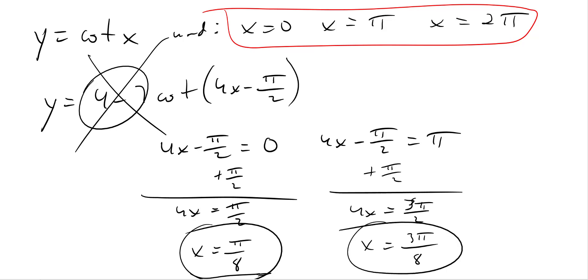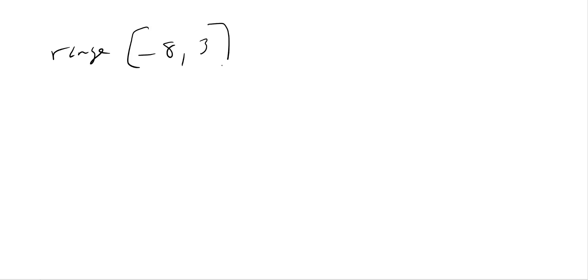So in about 23 minutes, we figured out how to find asymptotes and how to find domains and ranges for all the different trig functions. One last thing about maxes and mins: if you know the range is, say, from −8 to 3, then −8 is your minimum and 3 is your maximum. But for secant, cosecant, tangent, or cotangent graphs, there's no min or max because they go to infinity and negative infinity. Have an outstanding day — adios!